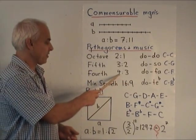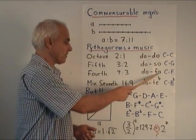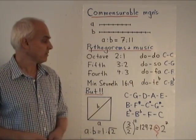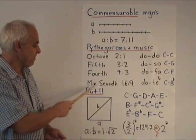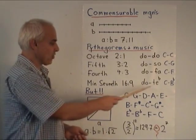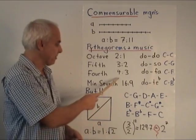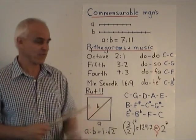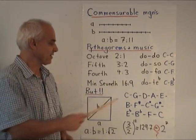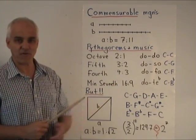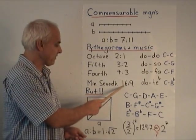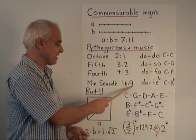A perfect fourth in the ratio four to three, that's from DO to FA, DO RE MI FA, from C to F. A minor seventh, which goes from C to B flat, is the composition of two perfect fourths. And they realized that in order to get that proportion, you just multiply this proportion by itself. So minor seventh is the proportion 16 to 9.